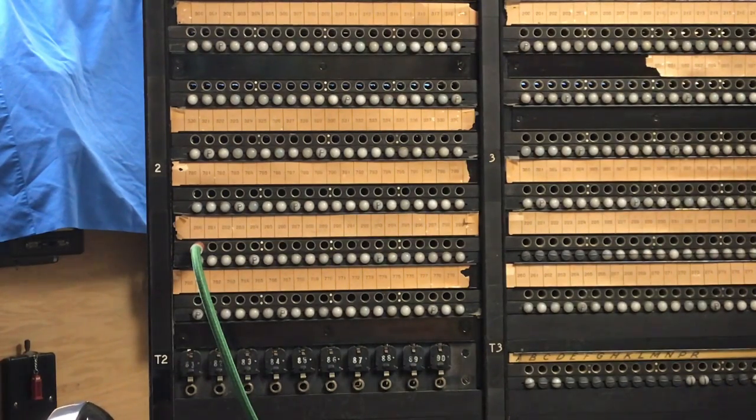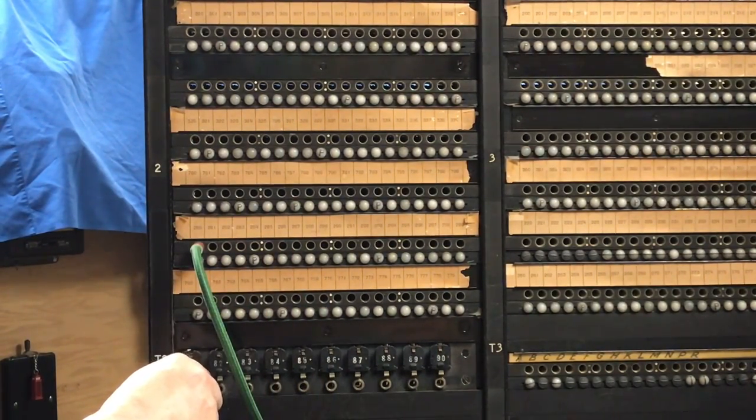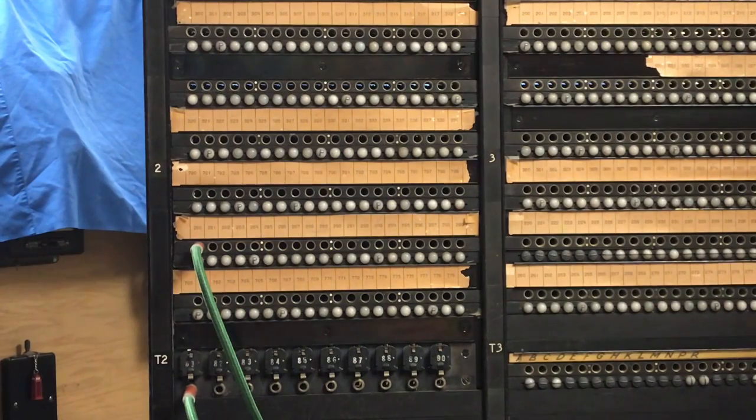The operator would operate the talk key and would talk to the subscriber who's placing the call. In this case, I will ring, and you will hear the audible ring in the background, my magneto telephone switchboard, which is trunk number one on this particular arrangement.